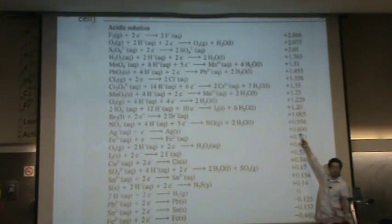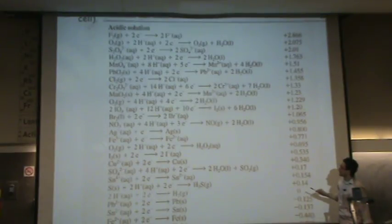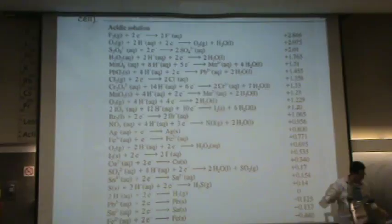I'm also going to write down the voltages or the cell potentials that go with it. So silver, silver plus is plus point eight, so we're going to write that down. And then copper two plus to copper is point three four, so we're going to write that number down as well.